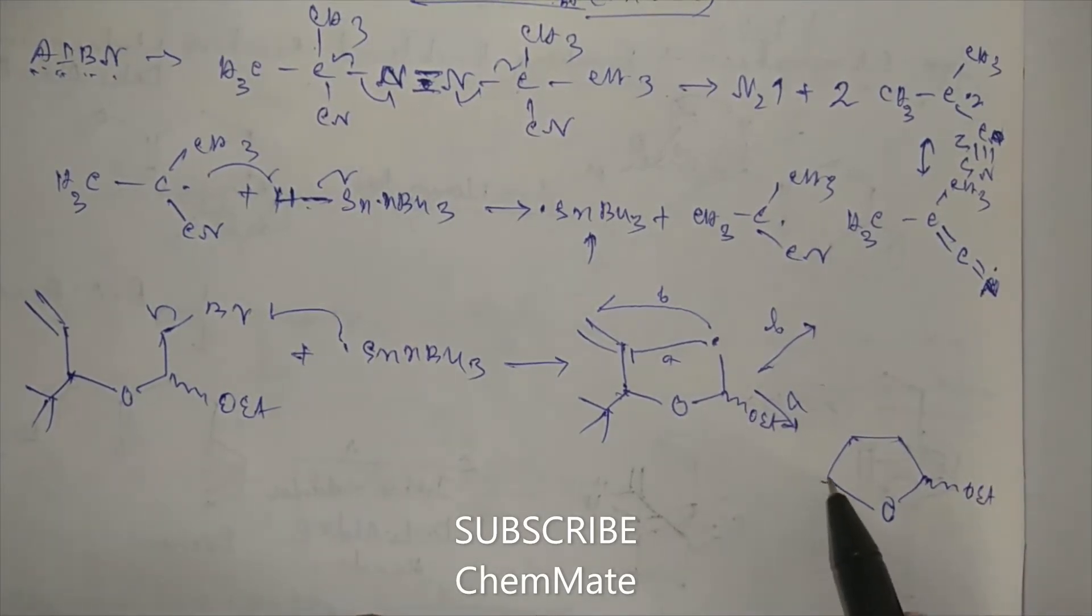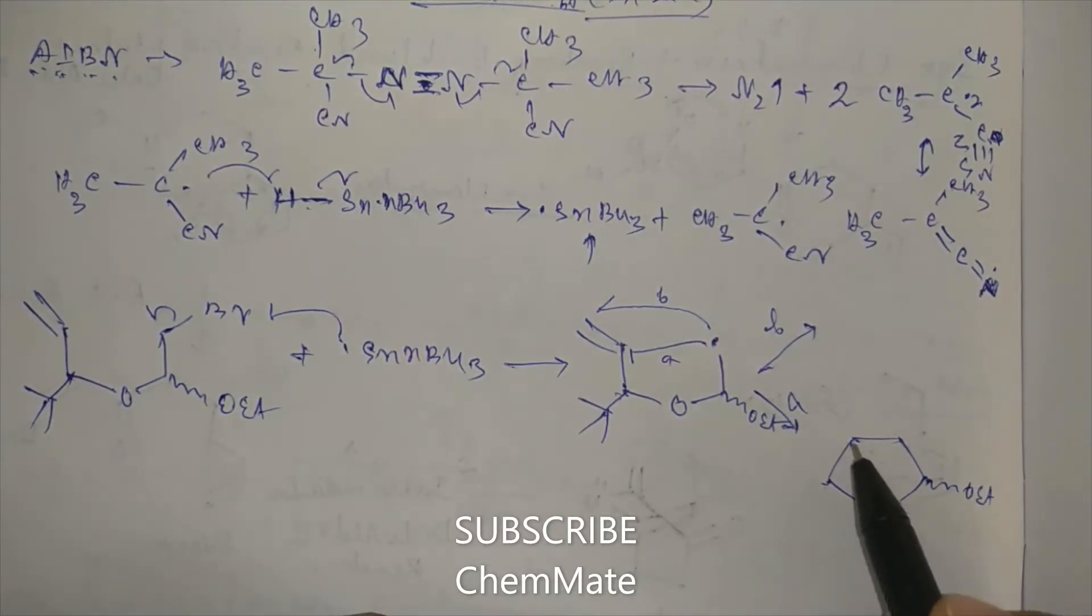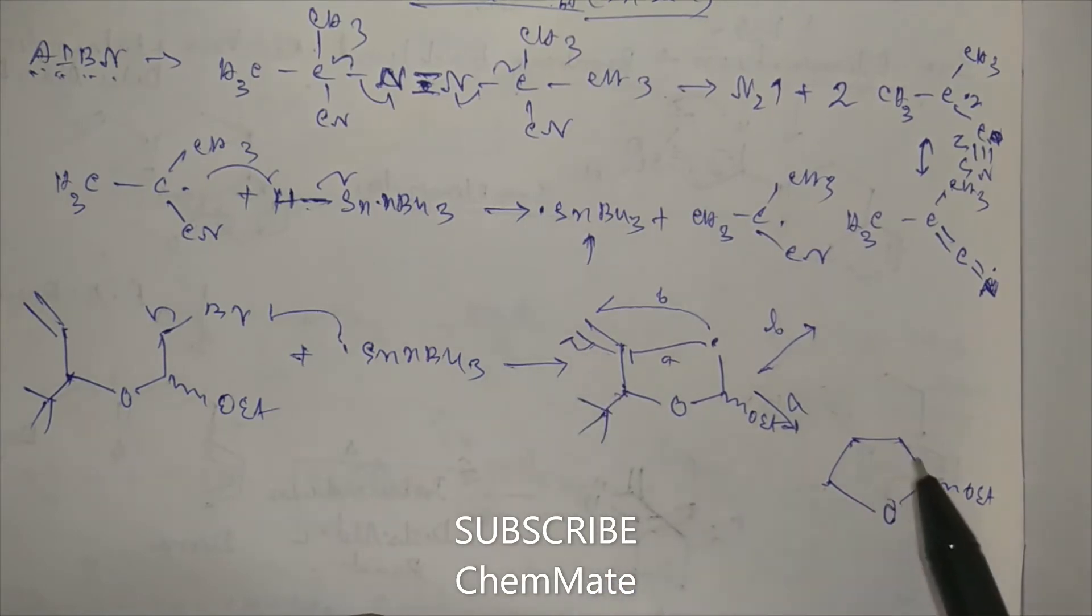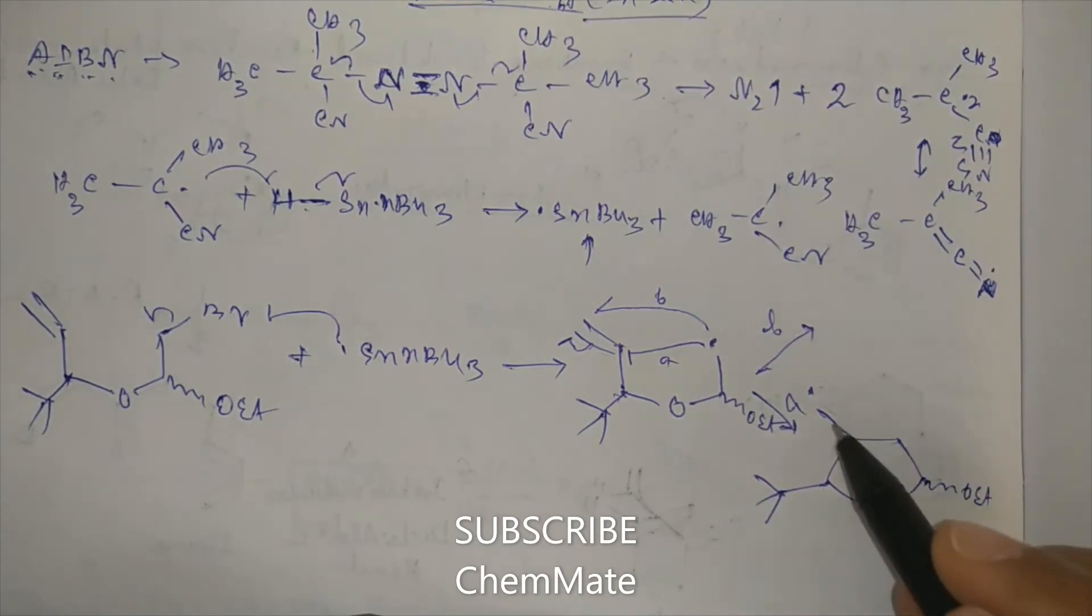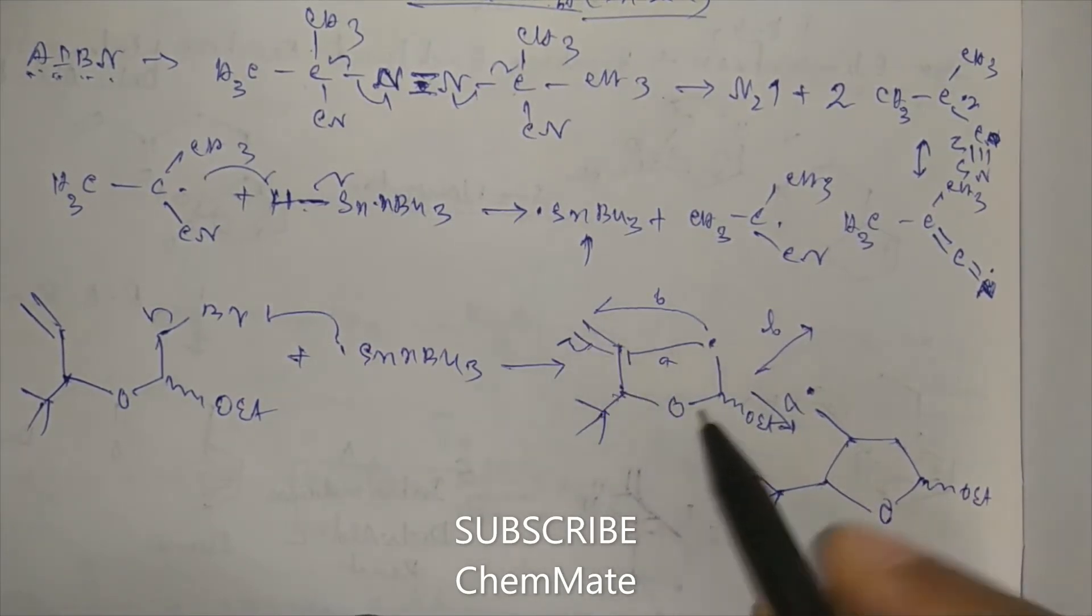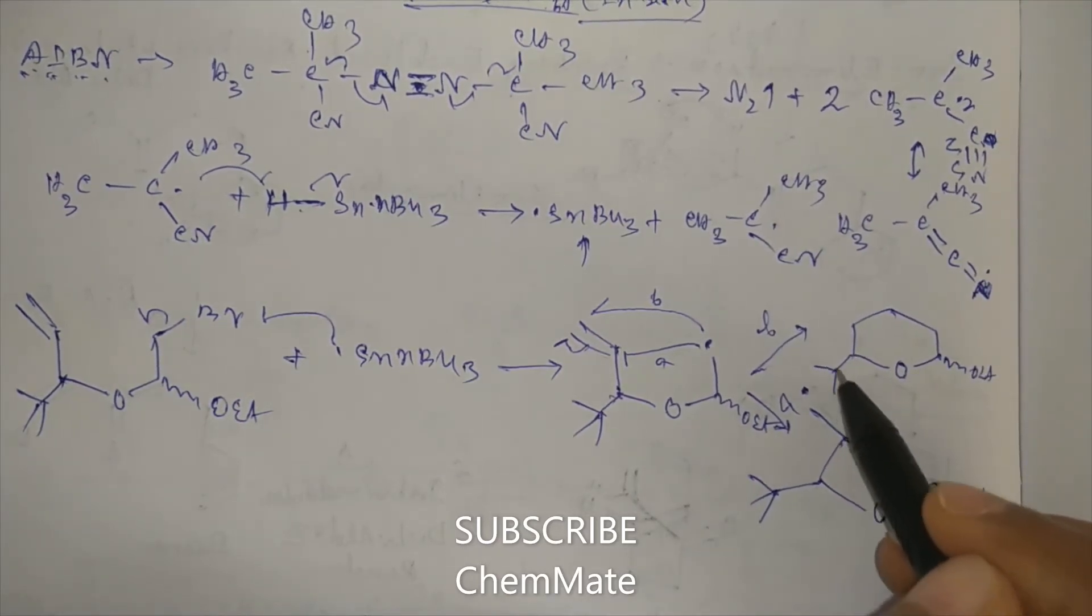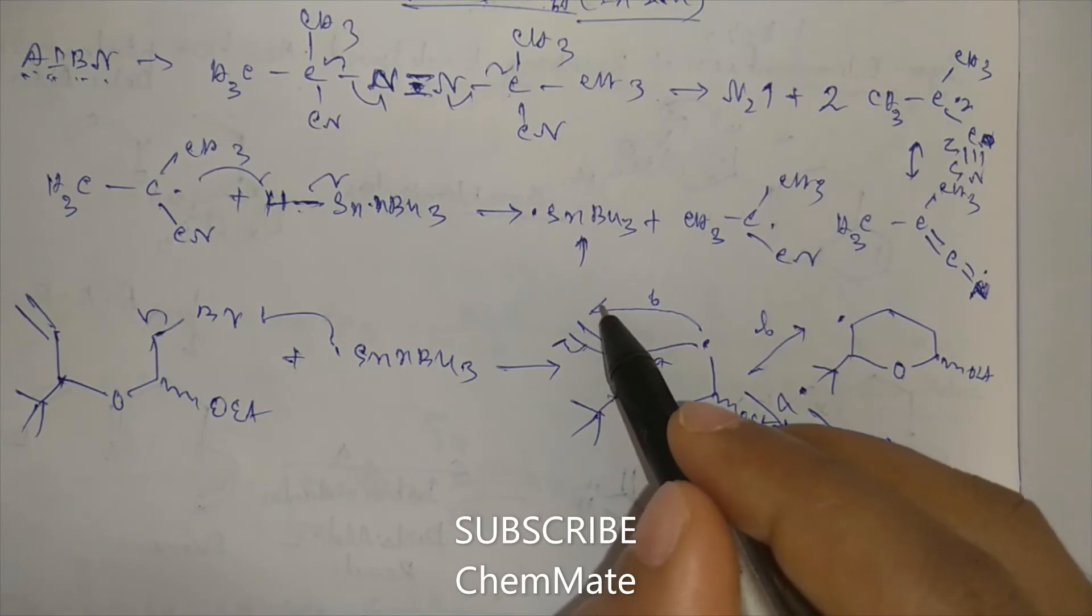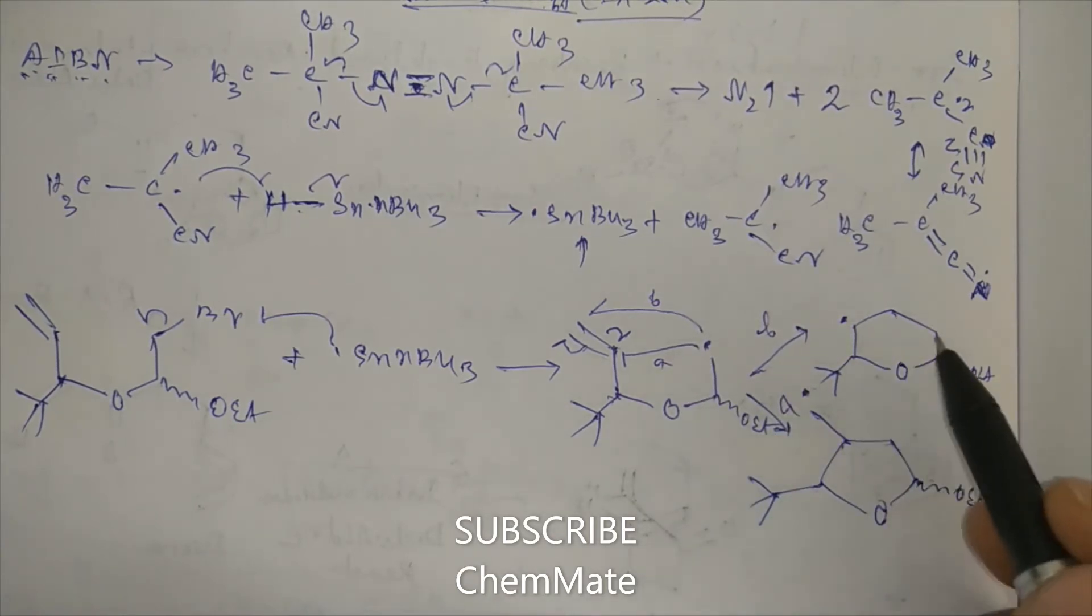So if we attack here, then the pi bond will break and one radical will be here. And another possibility is here. So here a 6-member ring will be formed with OEt, and the radical will be here. So for B attack, the radical will be here.